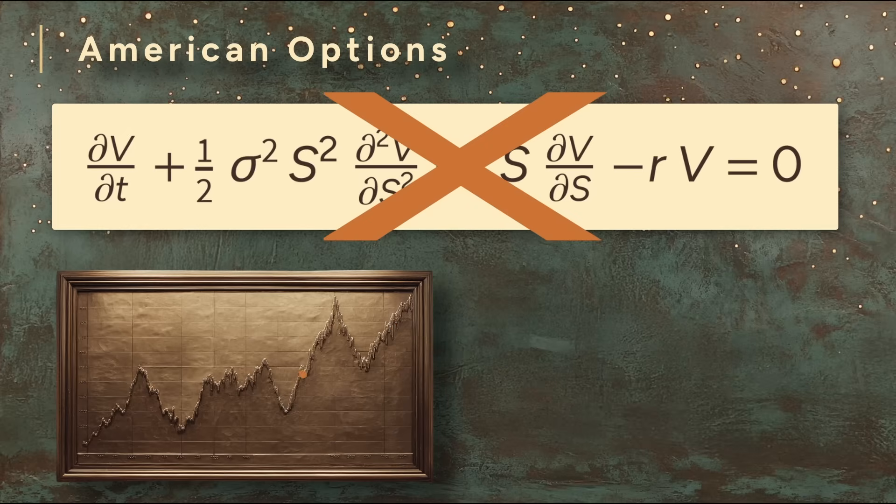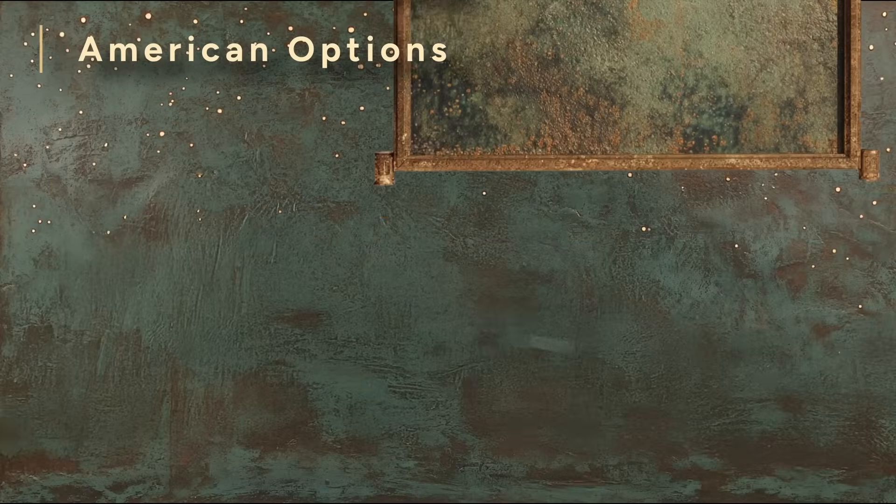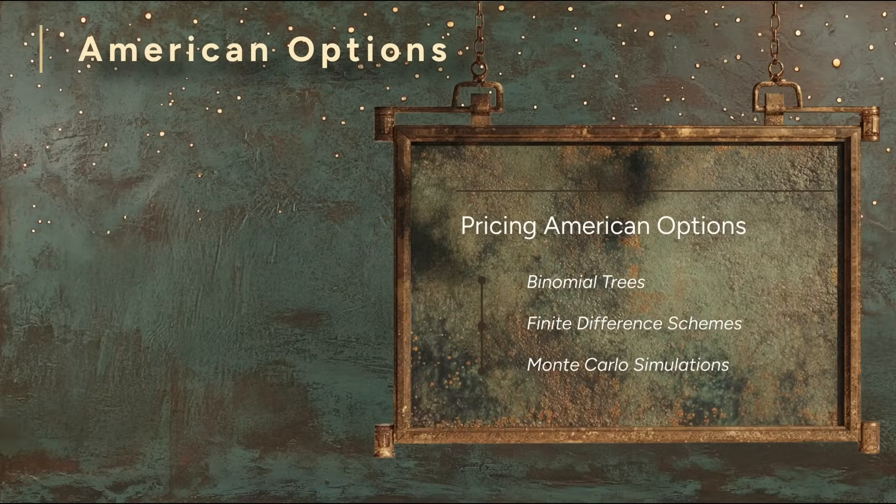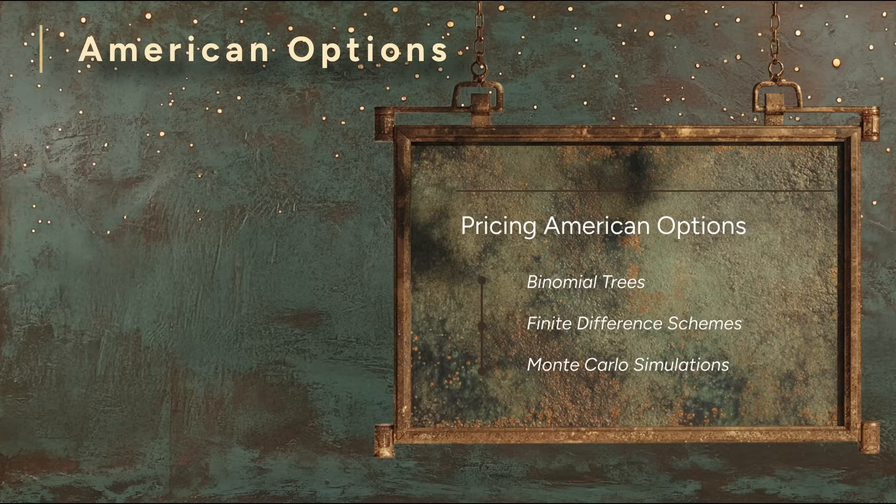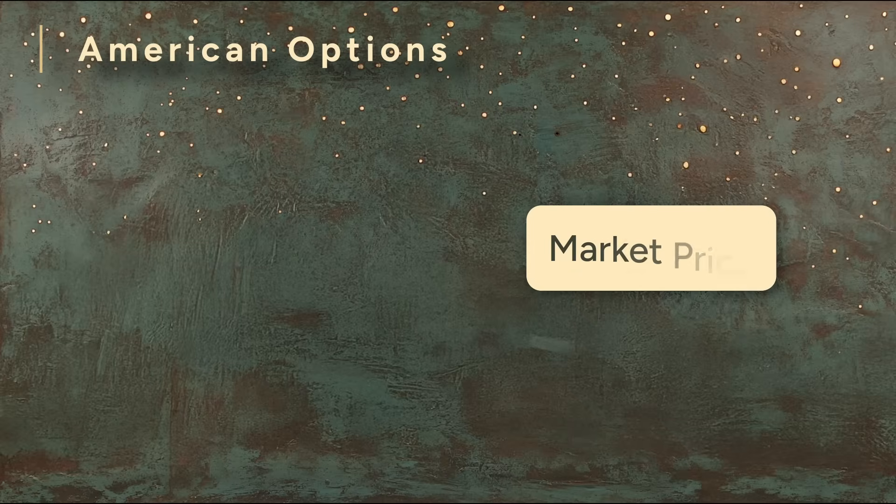To handle this, quants turn to other methods. For example, binomial trees, finite difference schemes, or Monte Carlo simulations. For our purposes, the details of each model matter less than the principle they share. Just like with European options, we take the market price of the American option and back solve for the volatility.